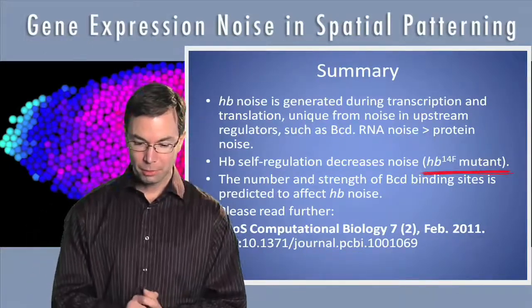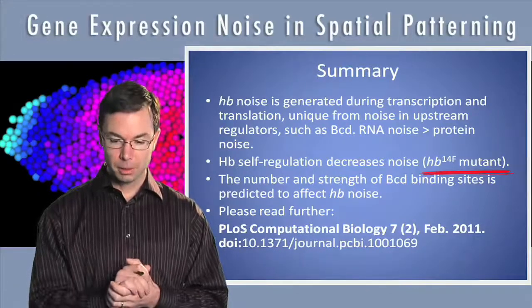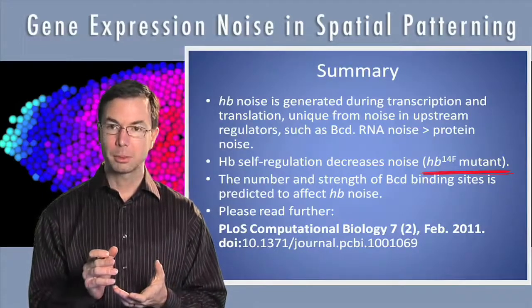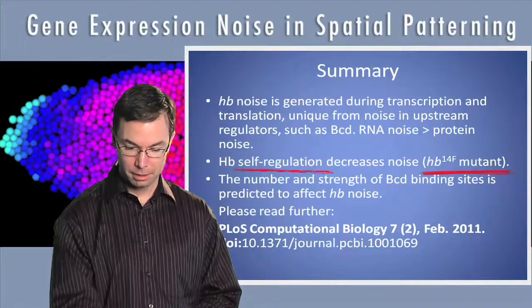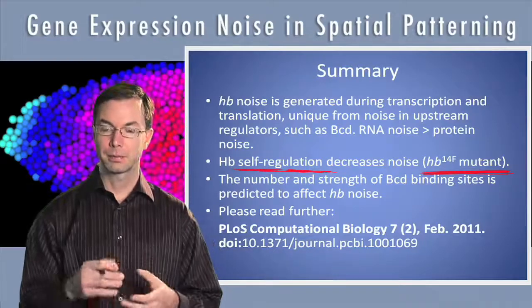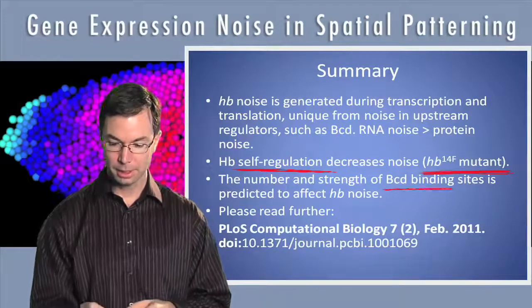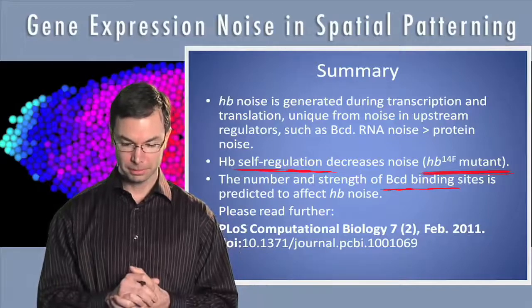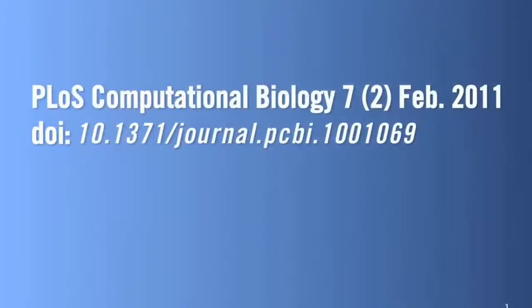The overall result from this paper is that the transcriptional and translational reactions in hunchback expression create a unique type of noise, that hunchback noise is not directly dependent on bicoid, that this self-regulation that hunchback shows is a method for it to decrease noise, and that there's a basal mechanism where you can increase the number of bicoid binding sites, which we postulate does affect the noise. Thanks for your attention, and I'd encourage you to go read further on the details in the article itself in PLOS Computational Biology. Thank you.